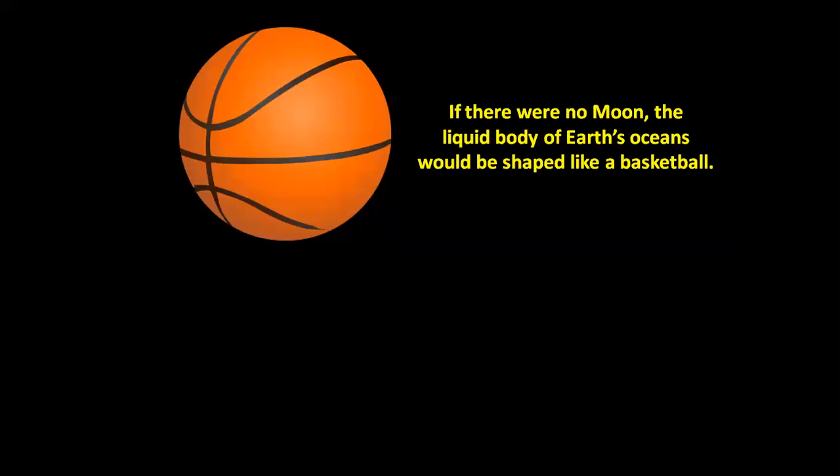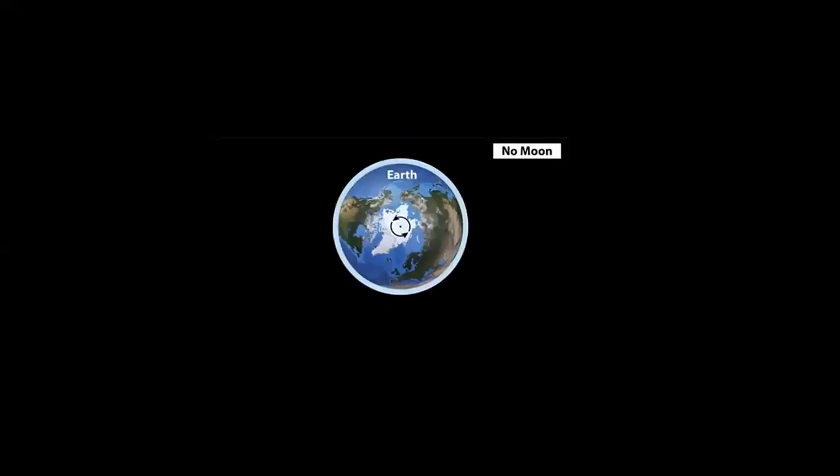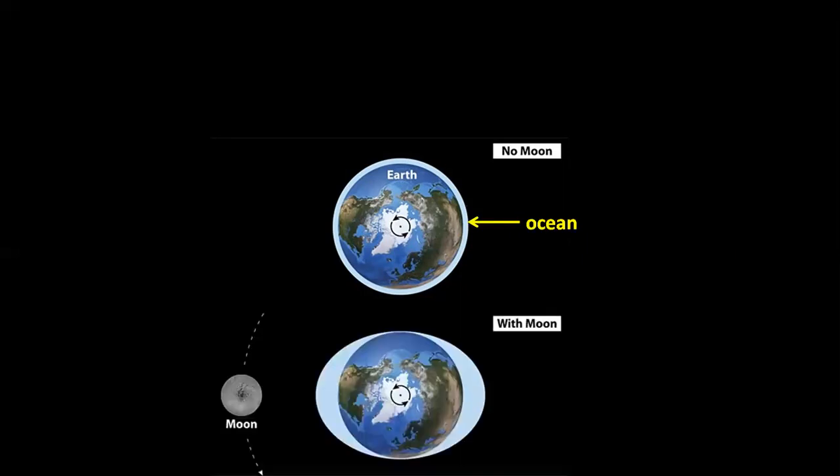If there were no Moon, the liquid body of Earth's oceans would be shaped like a basketball. The Moon's gravity causes the liquid body of Earth's oceans to be shaped like a rugby ball. With no Moon, we see the oceans shaped like a basketball. And with the Moon, we see the oceans shaped like a rugby ball.